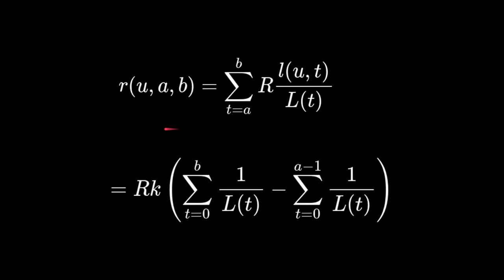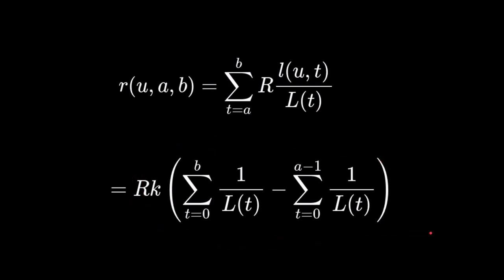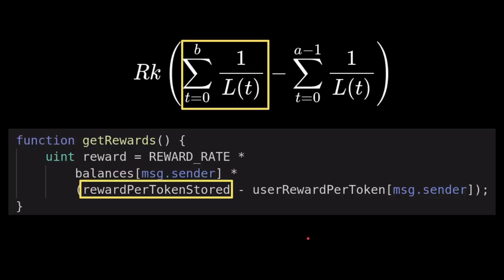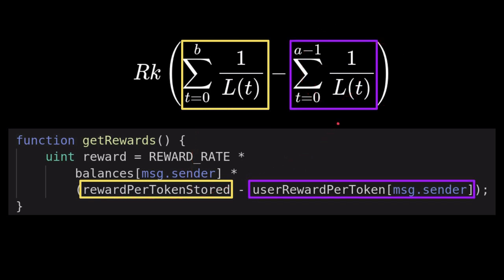In the previous video, we said that the reward a user can receive between time intervals a and b is given by a formula, but that formula is not efficient. We derived a more efficient way of calculating the reward using a new equation. The first part of that equation can be stored in a single variable, and the second part can be stored per user in a single variable.